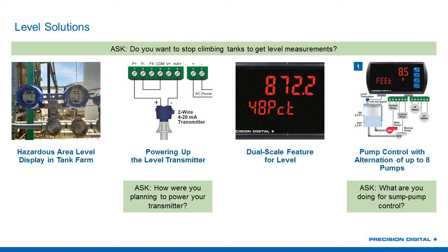If I ask those questions and they have no response and really no interest in level displays, I can move on to the next section. If there's some interest, we have more information in the document on hazardous area displays, showing level in a tank farm, how you power up the level transmitter using the Precision Digital unit, and our dual scale feature for level control. For example, rather than seeing 872.2 inches, they'd really rather see it in percent — 48% full. That's what the dual scale feature is for.